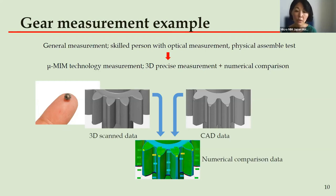Also, there was no clarity or fixed guidelines for measuring or reporting in such inspection. Therefore, most gear quality assurance requires a movement check after counterparts are assembled. However, in micro-MIM technology, precise high-resolution 3D measurement is deployed, and with careful data analysis, we evaluate numerically.